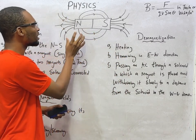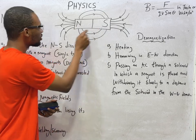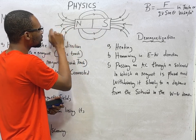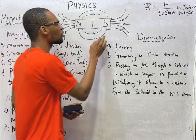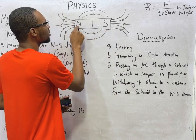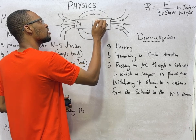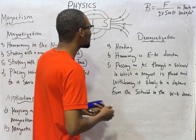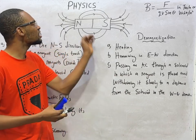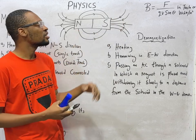Looking at the magnetic lines of force: at the north pole, the lines are originating from and going out of the north. At the south pole, the lines are going into the south. The arrow goes out from the north and comes in at the south. So the magnetic lines of force are imaginary lines that originate from the north, go out from the north, and terminate or go in at the south.